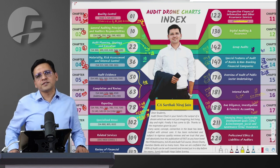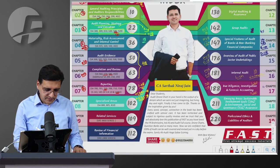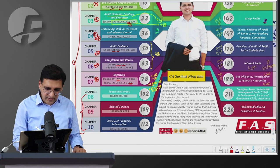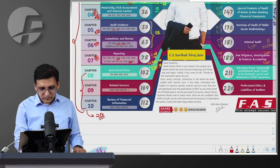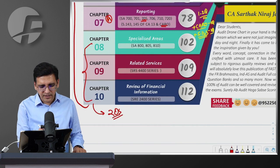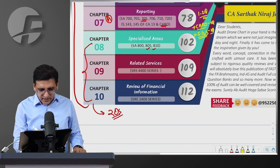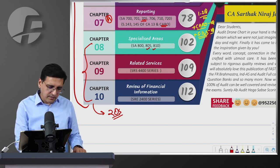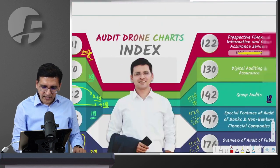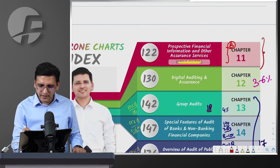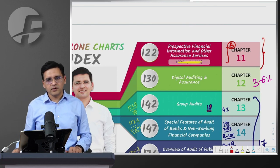From chapters 8, 9, 10, and 11 combined, you can expect minimum two questions. SA 805 and 810 are important. The 4400 series is important in its own right - I'd give it A category. Review: I'd classify B and C category. Prospective: I think SA 3402 and SA 3400 are more important than SA 3420.